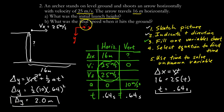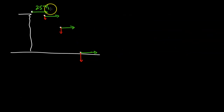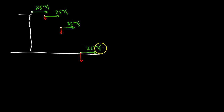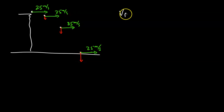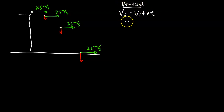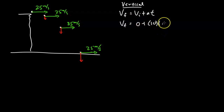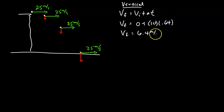The initial launch height is 2 meters. For part two, what was the final speed when the arrow hits the ground? Horizontally it's moving at a constant 25 meters per second. To find the vertical velocity at impact, I use v_final equals v_initial plus at: zero plus 10 times 0.64 seconds gives a final vertical velocity of 6.4 meters per second.